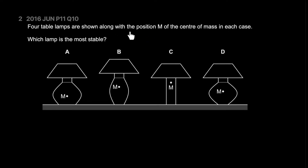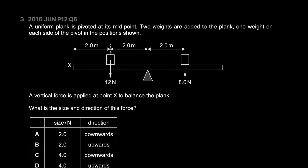Four table lamps are shown along with their center of mass positions. For each, which lamp is the most stable? You want a high surface area at the bottom and the mass to be lower. The most stable lamp is the lowest and widest one, so the answer is A.